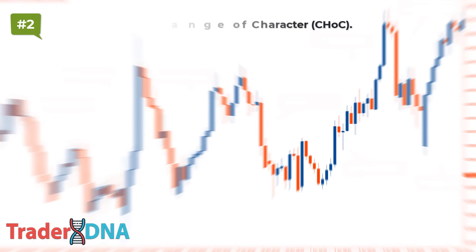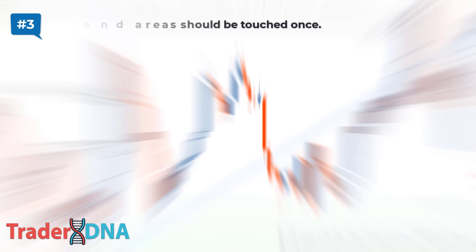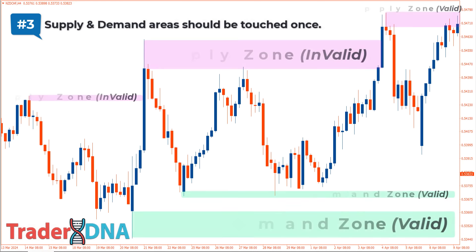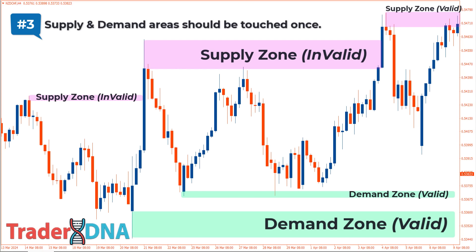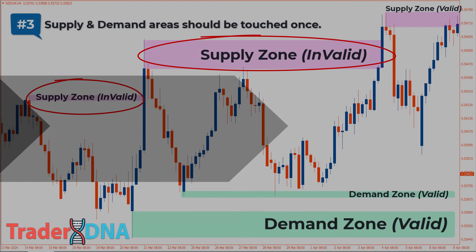The second criterion for a valid area is that the price must experience a break of structure or change of character. The third criterion is that the area must be unmitigated — supply and demand areas should ideally only be touched once. If an area has been touched or mitigated before, we consider it invalid and less probable. If an area doesn't meet any of these three criteria, we don't consider it a valid supply or demand area.